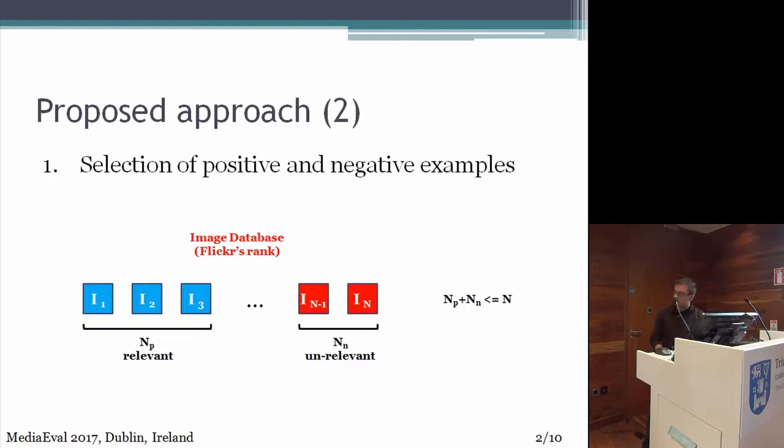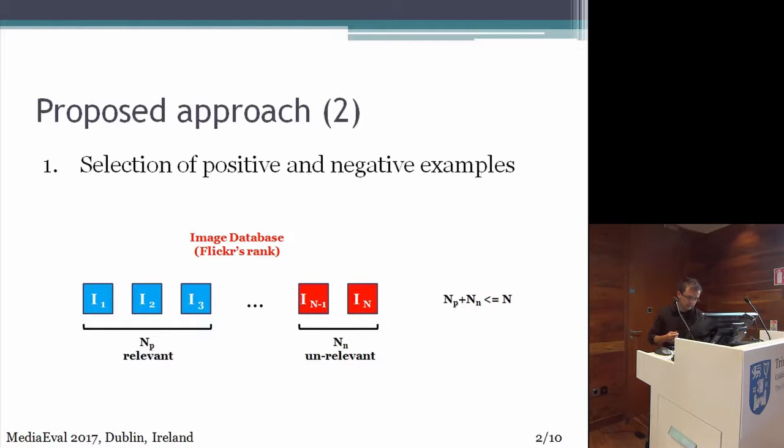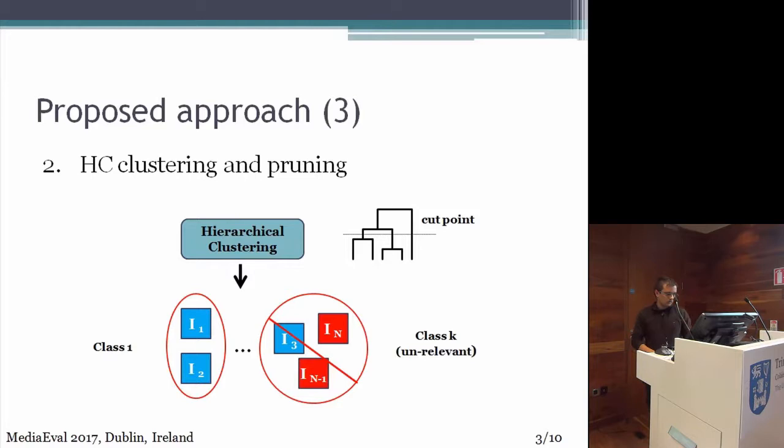For the selection of positive and negative examples, the first step: we have the ranked images according to Flickr, starting from the left side, and we assume that the first retrieved images are relevant and the very last ones are irrelevant. We consider the relevant images as positive examples and irrelevant images as negative examples. Of course, this should not exceed the total number of the retrieved images by Flickr.